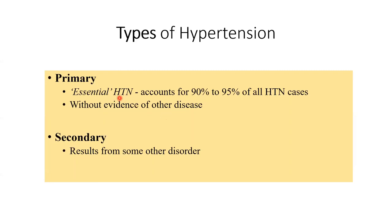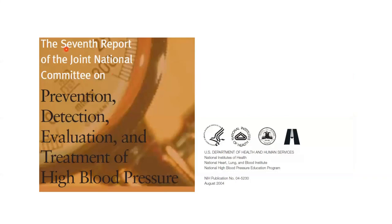This document is the 7th Report of the JNC — the Joint National Committee. It looks at blood pressure from various aspects: how to prevent it, how to detect it, how to evaluate what type of blood pressure abnormality is present, and how to treat it. It is a U.S. Department of Health and Human Services initiative, dated 2004.